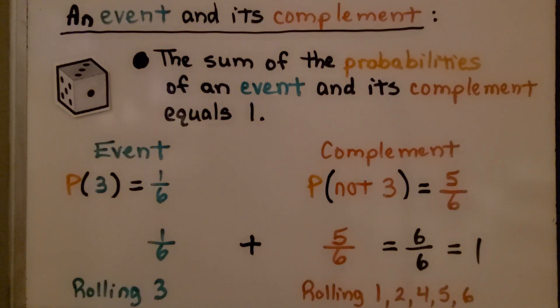For an event and its complement, the sum of the probabilities of an event and its complement equals one.